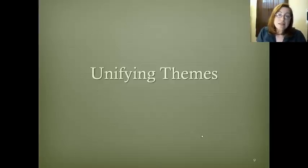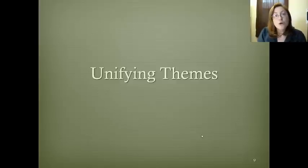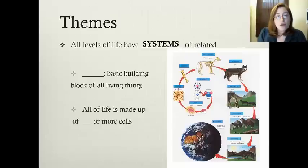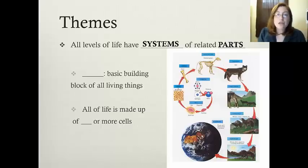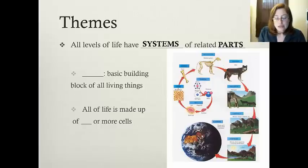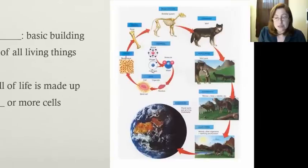Beyond those key characteristics of living things, there are some themes in biology we will see pop up over and over again. The first theme: all levels of life have systems of related parts — little things build up to make bigger things. Looking at this diagram, it starts with the littlest thing: on a chemical level you can talk about an atom. Here is an example of a hydrogen atom and an oxygen atom forming a water molecule.